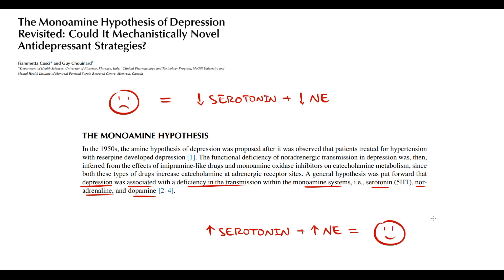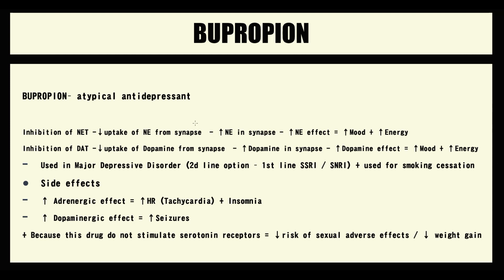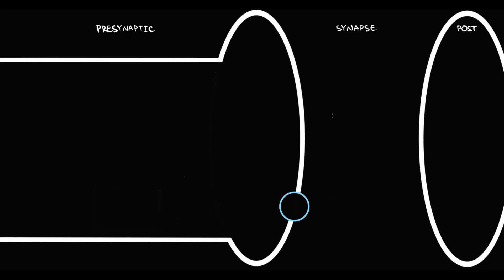The most obvious approach to treat depression is to increase the amount of serotonin and norepinephrine in the synapse. Drugs that cause increasing serotonin or norepinephrine in the synapse we call antidepressants. One of these antidepressants is called bupropion. Bupropion is an atypical antidepressant because of its multiple effects. First of all, bupropion inhibits the function of the norepinephrine transporter, and to explain this we have to know how adrenergic neurons work.